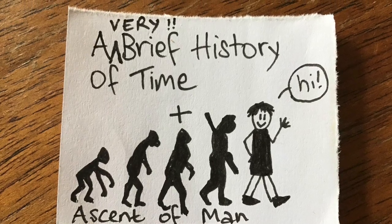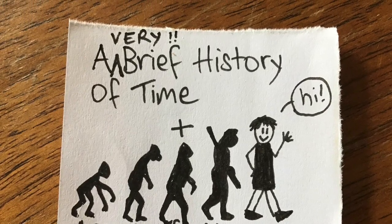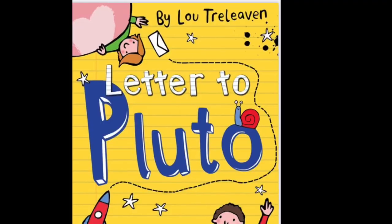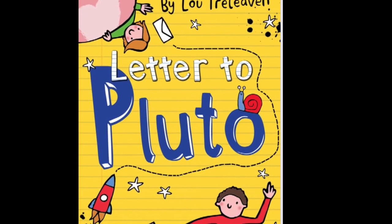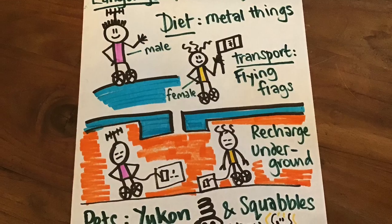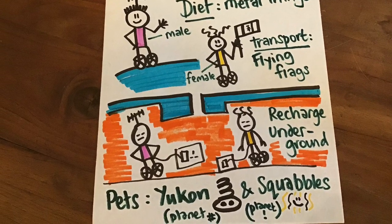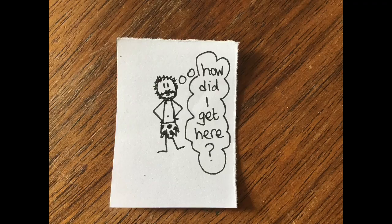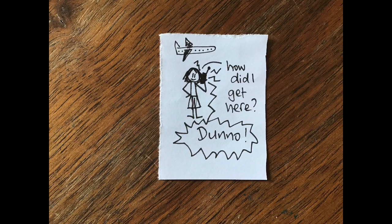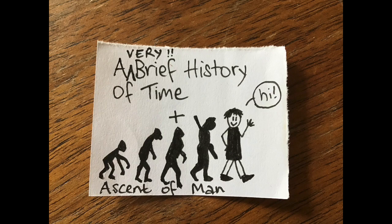On today's video, an extremely brief history of time and the ascent of man. How did we come into being? A reading from Letter to Pluto by Lou Traleven and Create Your Very Own Planet. Today's video is all about how we came into being in the modern lives we live today and beyond. It's like a brief history of time and the ascent of man all rolled into one. So it's a pretty big subject — we'd better kick off.